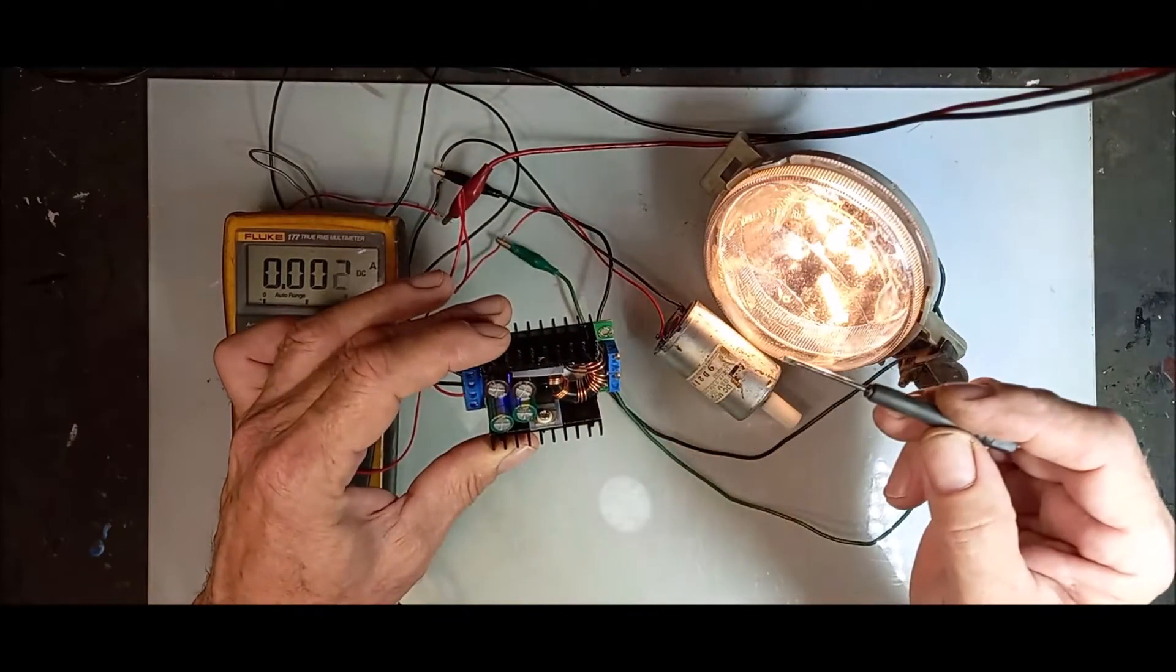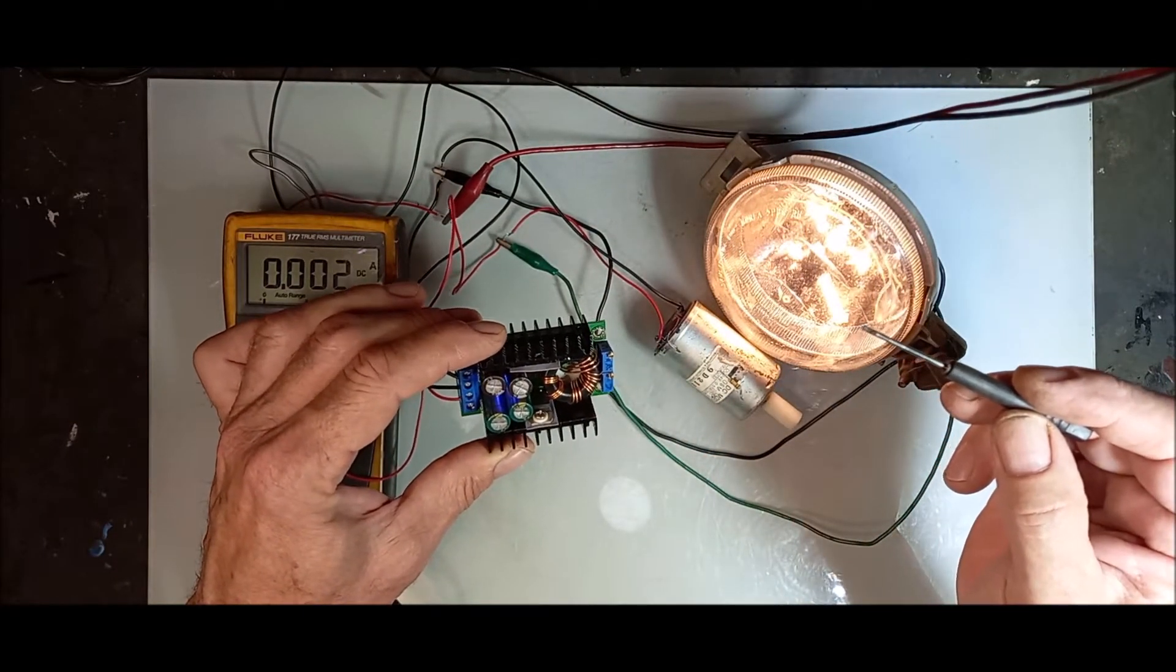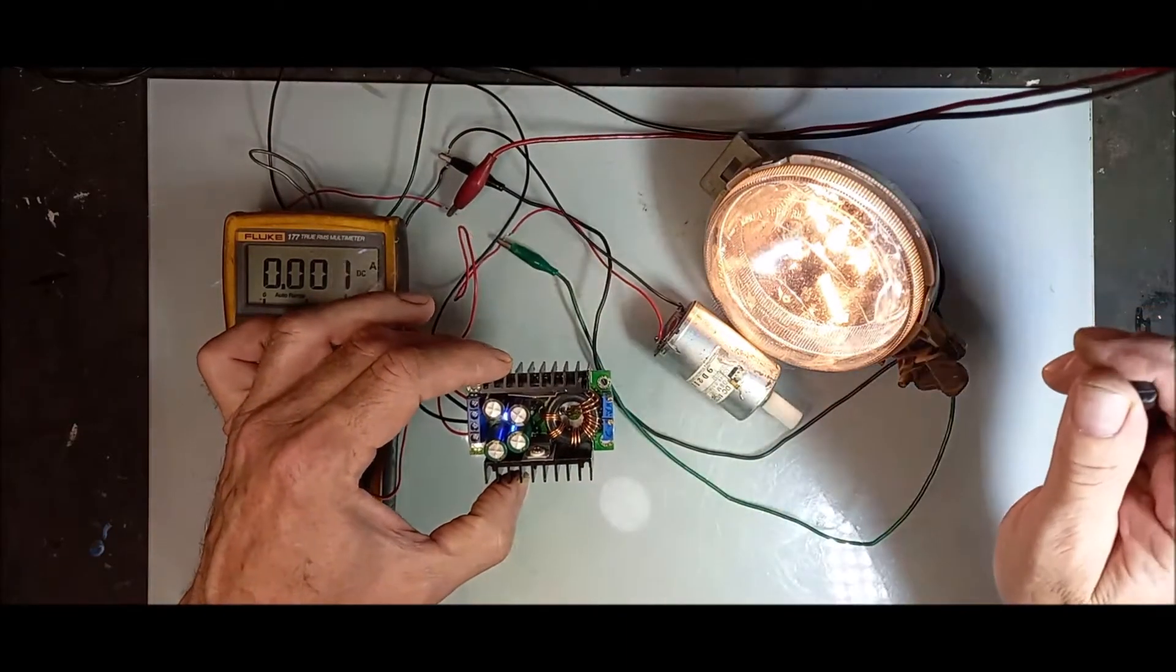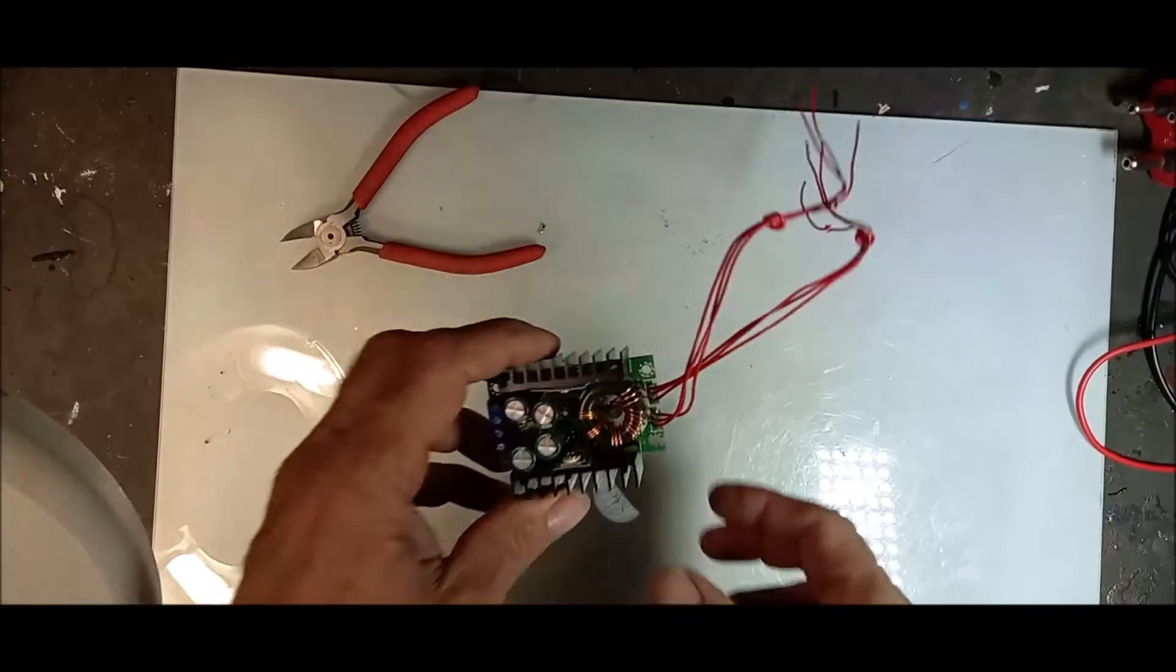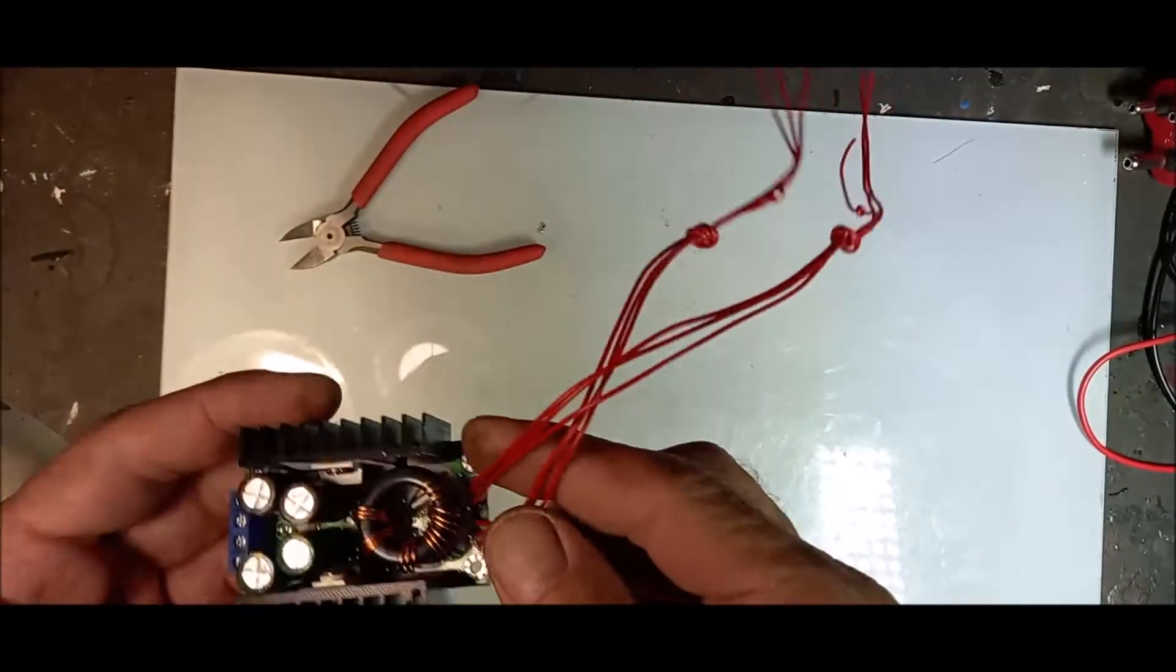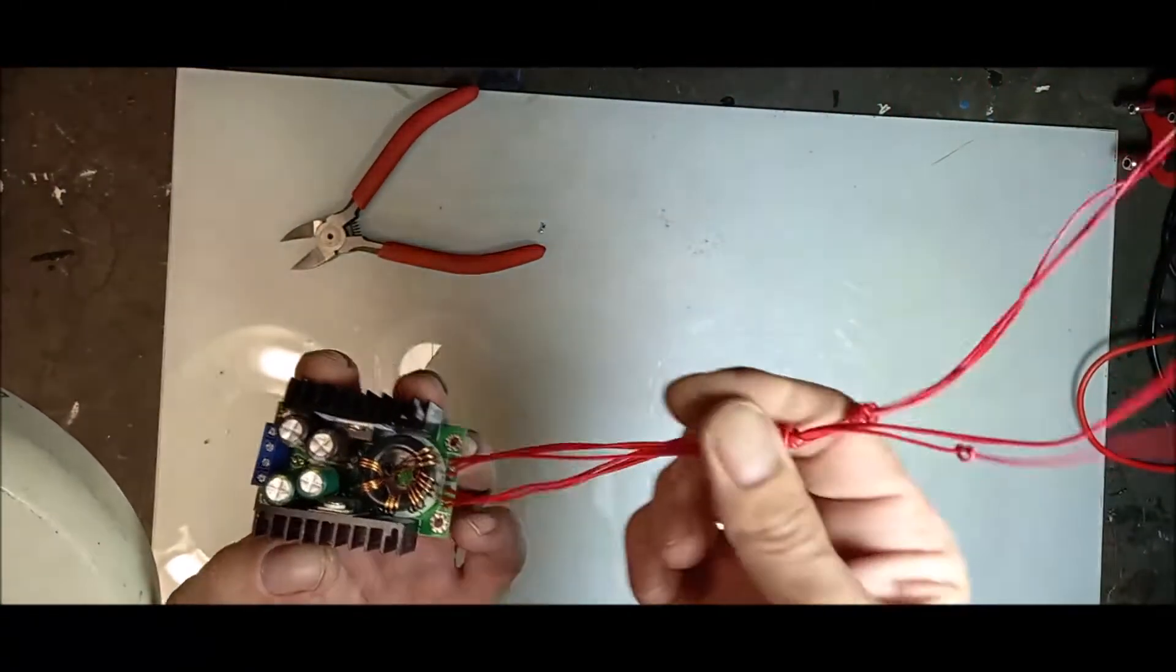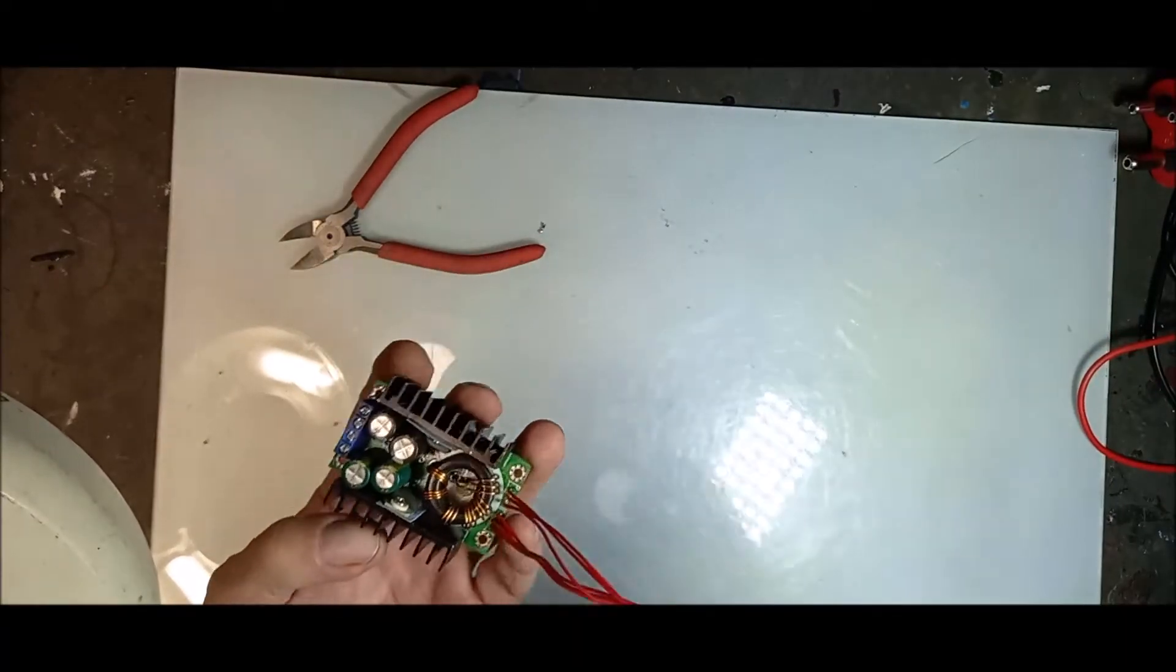There's an LM358 for adjusting what the potentiometers set, and then in turn adjust the chip here that does all the work, the switching. Okay, I'm going to build it in now in my power supply. I removed the potentiometers and I'm going to extend it with some wires so that I can put it through my enclosure.